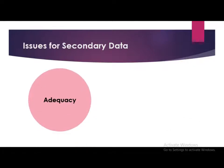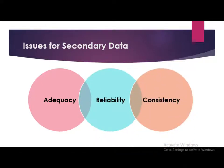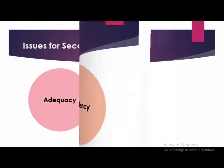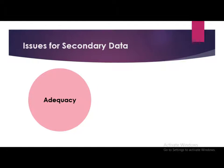There are three issues to be considered for secondary data: adequacy, reliability, and consistency. Regarding adequacy — secondary data may or may not be sufficient for the research being conducted. There may be a lack of accuracy in previous data, and there is a possibility that available data has different objectives and scope, so it may not be sufficient to fulfill the needs of the present study.